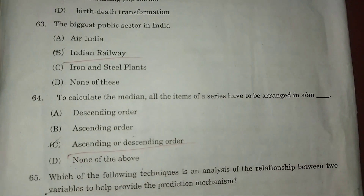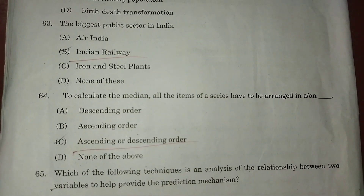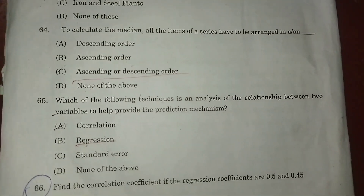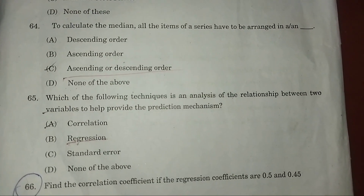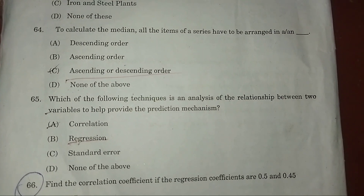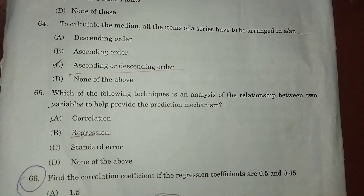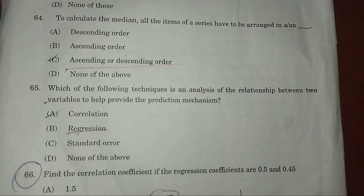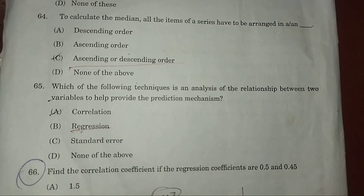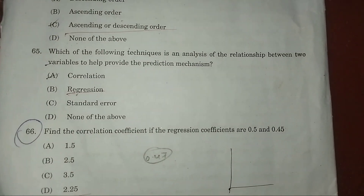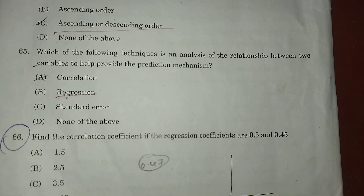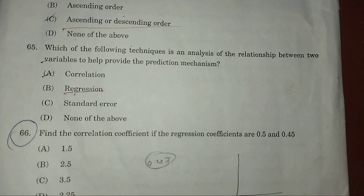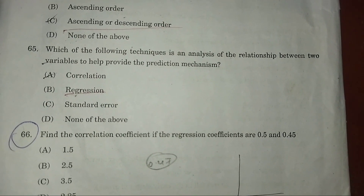Question 63: The biggest public sector undertaking in India is Indian Railways — answer: B. Question 64: To calculate the median, all items of a series must be arranged in — answer: C — ascending or descending order.